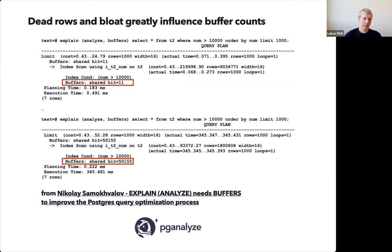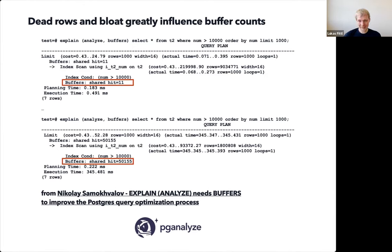This is from a great post by Nikolai from the Postgres.ai team. He pointed out that you really should be using buffers. In his example, he had a query that was fast — taking about 0.4 milliseconds — and that query only hit 11 buffer pages. Then he ran a big DELETE on this table, producing lots of dead rows and bloat. In the second example, he gets the same number of output rows but it's actually 50,000 pages times 8 kilobytes, and the query takes 340 milliseconds. This is a good example of where dead rows and bloat greatly influence performance, and EXPLAIN ANALYZE BUFFERS helps you pinpoint that.